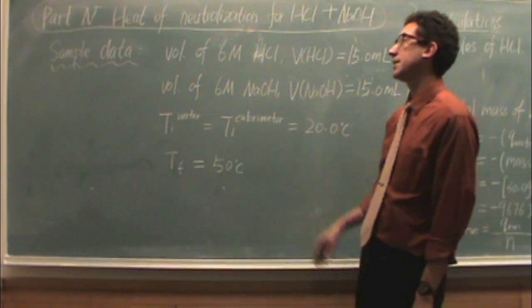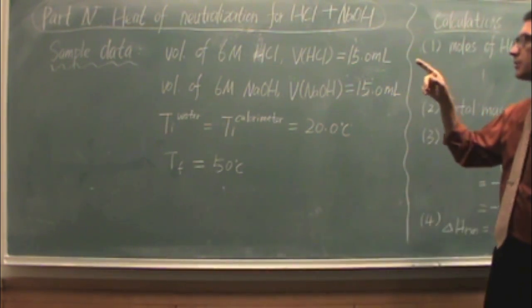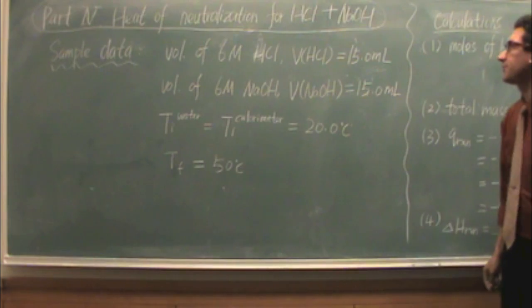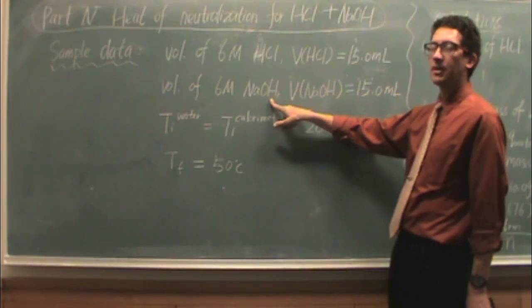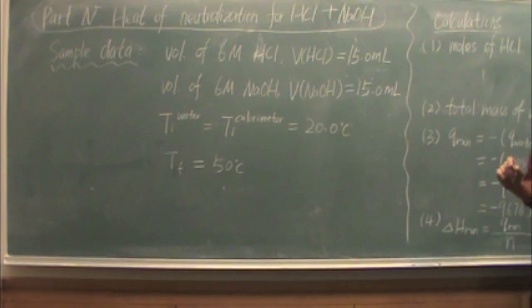Here's our sample data set. So we know the volume of the six molar HCl, that's 15 milliliters, and in this case for sodium hydroxide, it's also 15 milliliters.